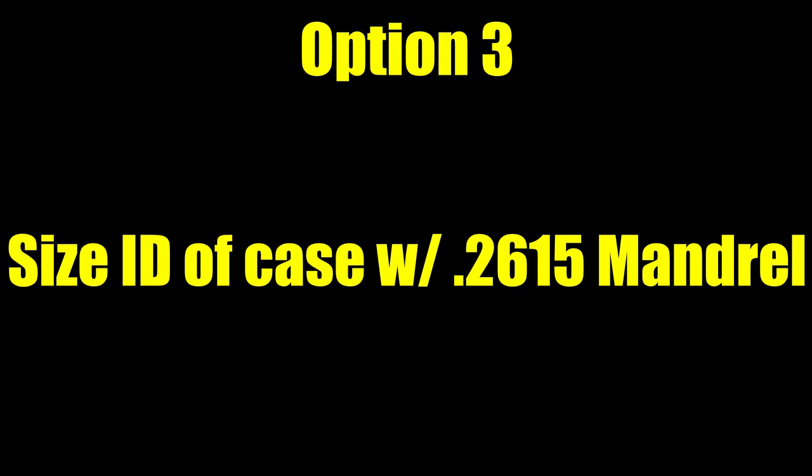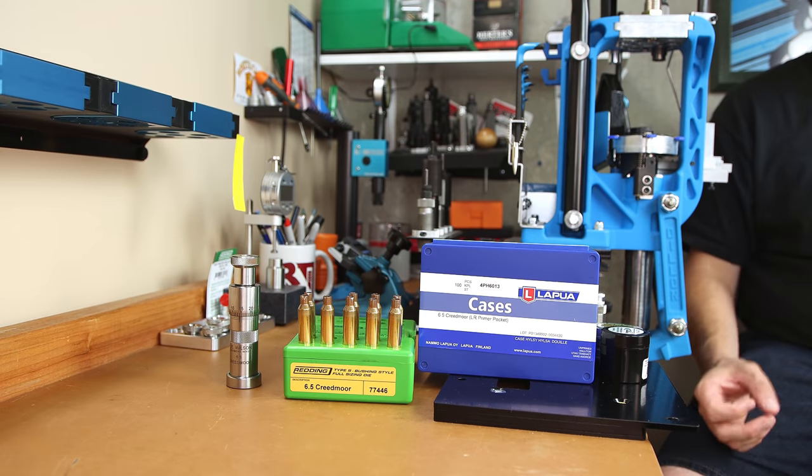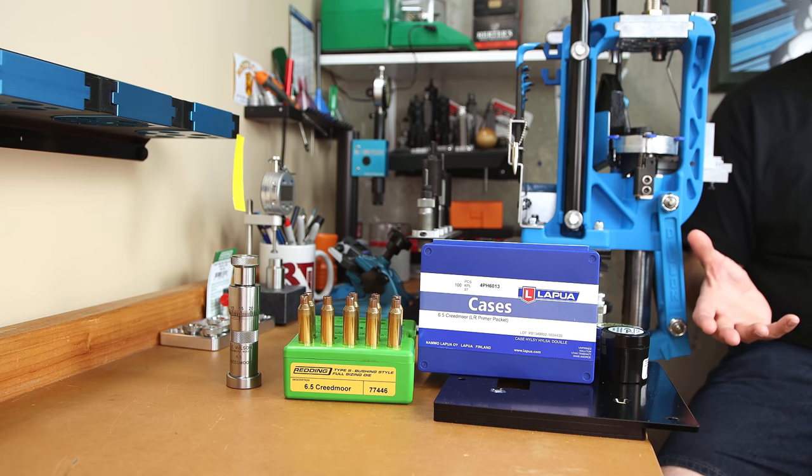Option 3 is the same as option 2, but a slightly different size expander. For this size, we're going to be using the 02615 mandrel and see if that mandrel is enough to iron out any of the wrinkles and still give us reasonably consistent neck tension.